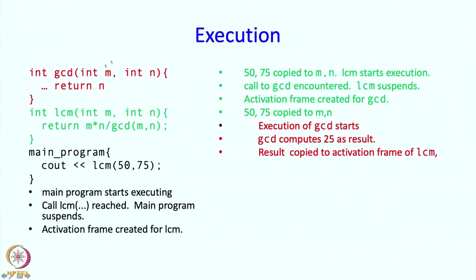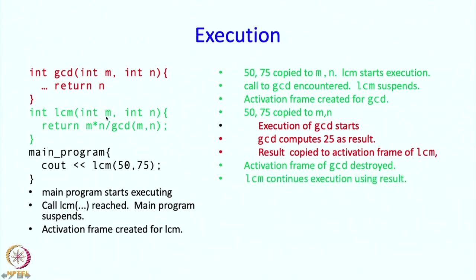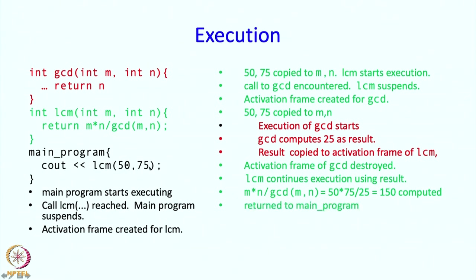GCD execution is complete, so GCD's activation frame goes away and LCM execution resumes. LCM continues: M times N divided by 25 is calculated — 50 times 75 divided by 25, which is 150. Since this is the return statement, the value 150 gets returned to the main program.